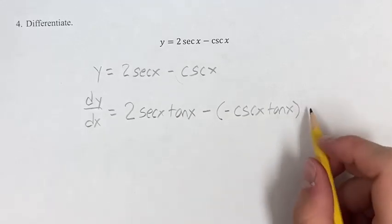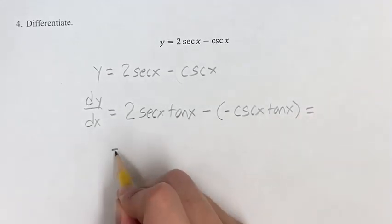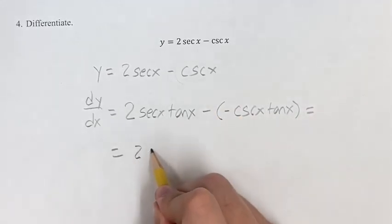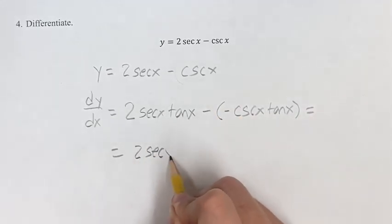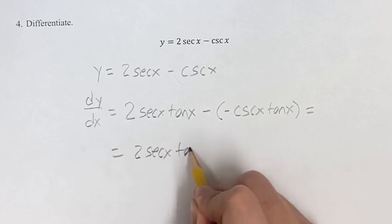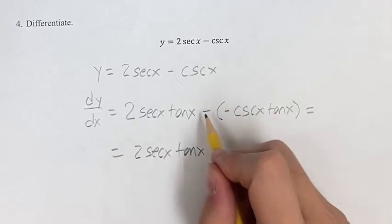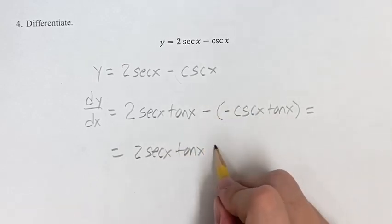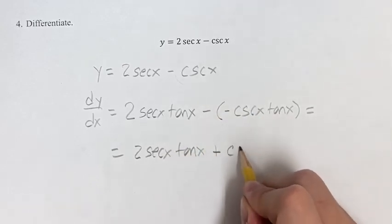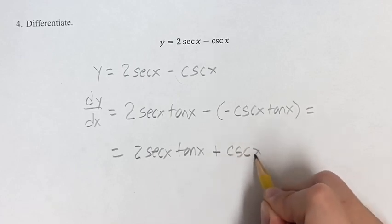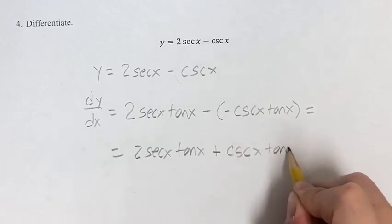And then we are going to just distribute this negative, so it's going to be 2 secant x tangent x plus — negative times a negative is plus — cosecant x tangent x.